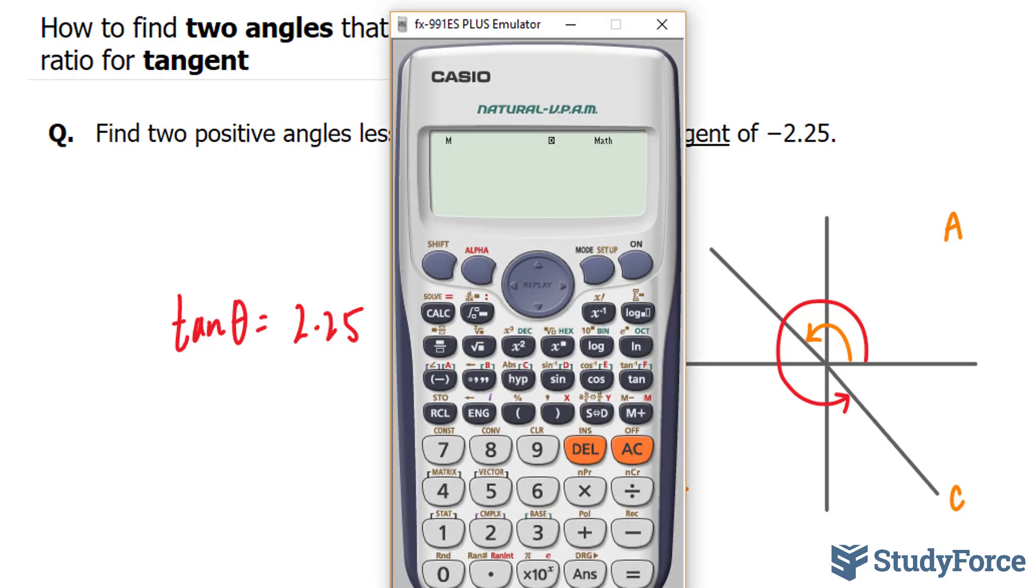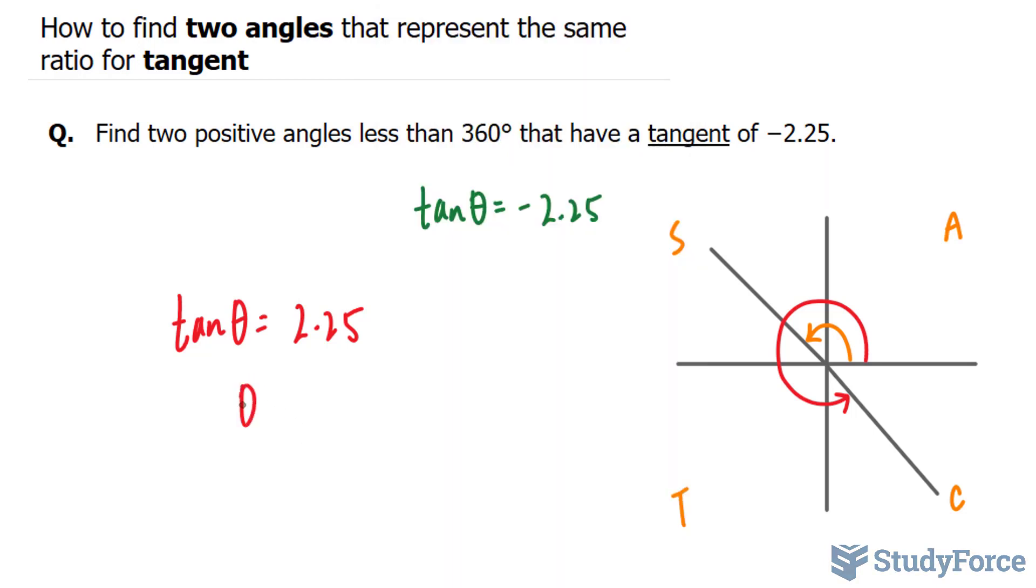And using our calculator, we can find out what angle that represents. It gives us an angle of 66.03 or simply 66 degrees. 66 degrees, if you look closely, will represent the reference angle for both of these terminal sides.